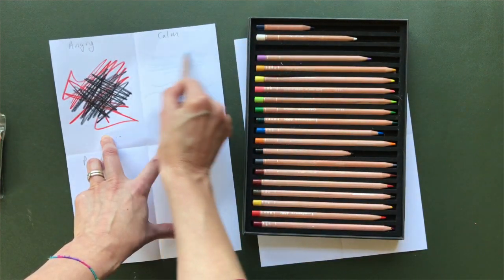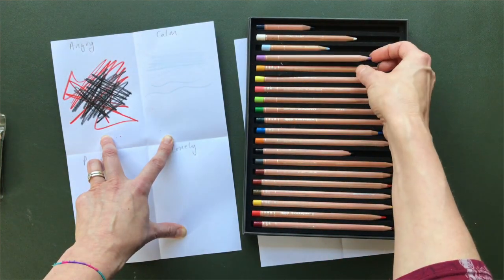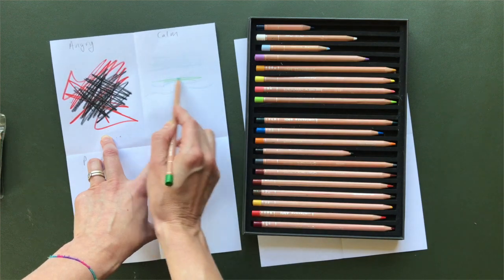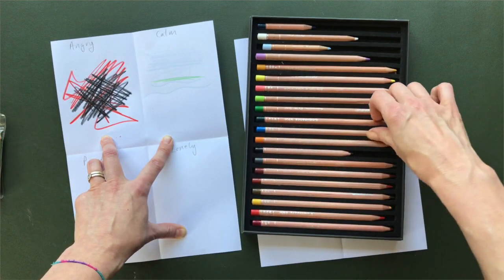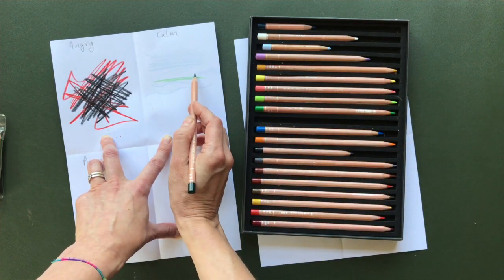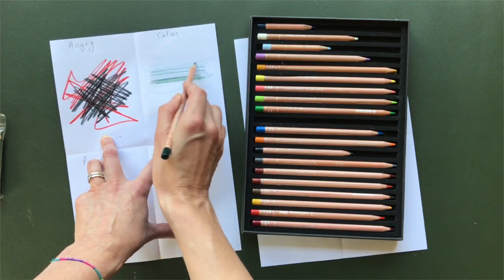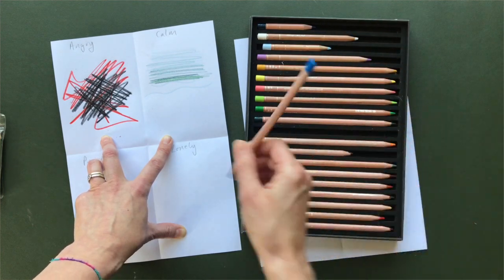Maybe have all the colors out in front of you, and then feel the emotion and try and see what, if I'm feeling angry, what color would I choose? Or if I'm feeling silly, what color would I choose? If you've got all the colors in front of you, it might help you to choose.